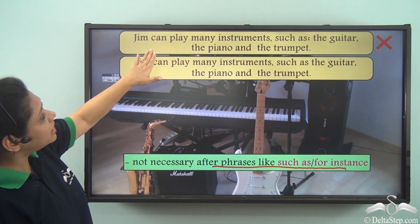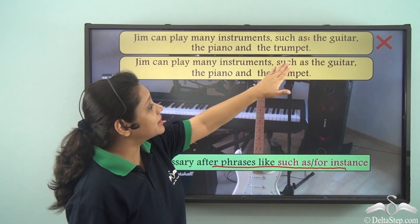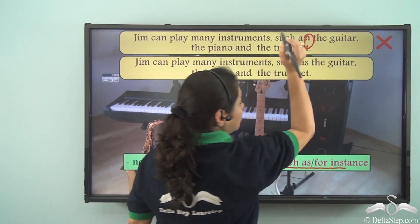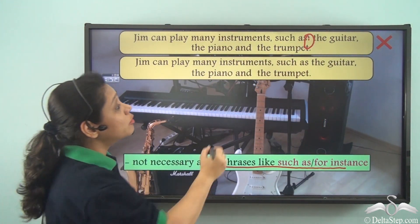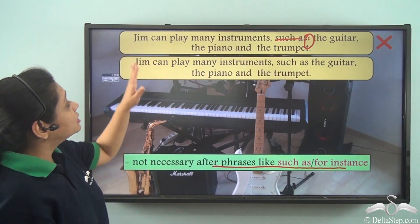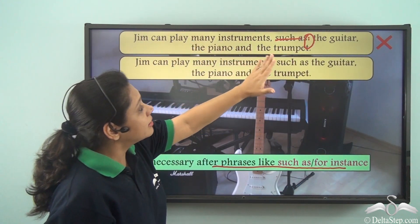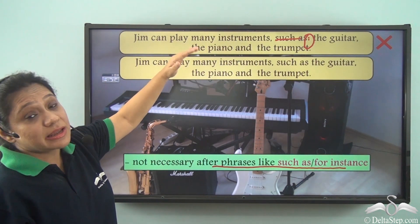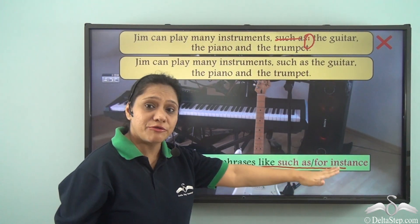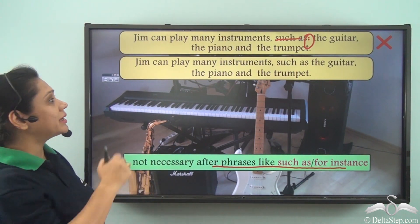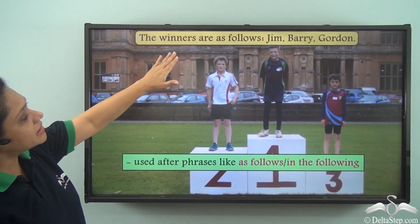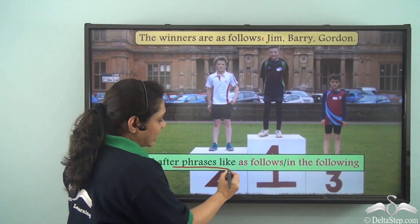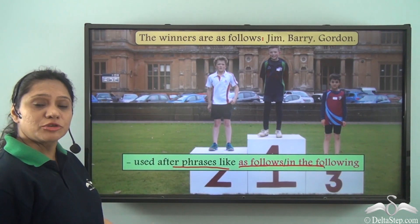For example, 'Jim can play many instruments such as the guitar, the piano and the trumpet' — no colon is used after 'such as.' However, we do use the colon after phrases like 'as follows' or 'the following' to introduce a list. For instance: 'The winners are as follows: Jim, Barry, Gordon.'